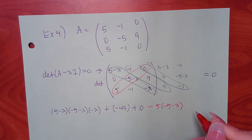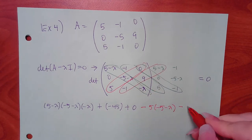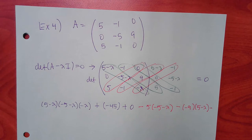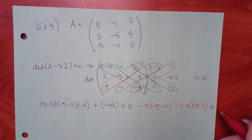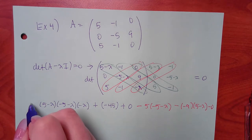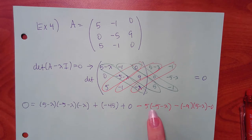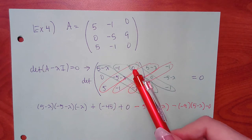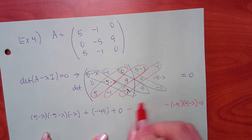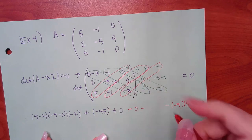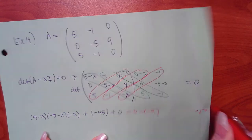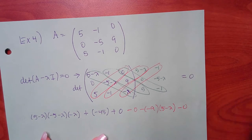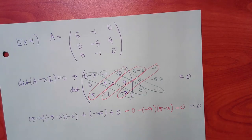Going in the negative diagonal direction: minus 5 times (negative 5 minus lambda), minus negative 9 times (5 minus lambda), and the third diagonal term is zero. Setting all this equal to zero and simplifying.